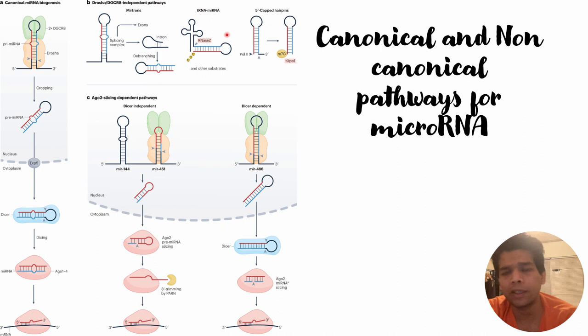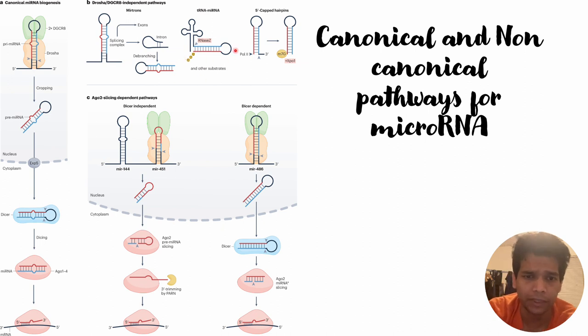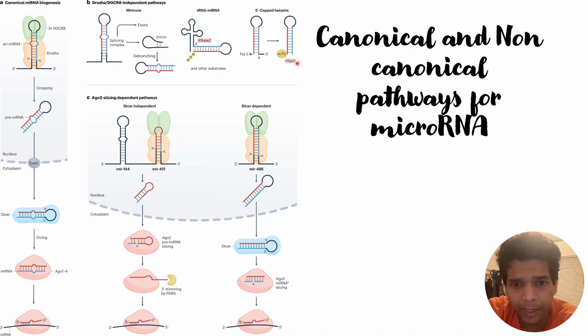The next kind of micro RNA is based on tRNA-derived micro RNA. In this case, RNase Z cleaves off part of the tRNA so that the tRNA fragment can act as a micro RNA.